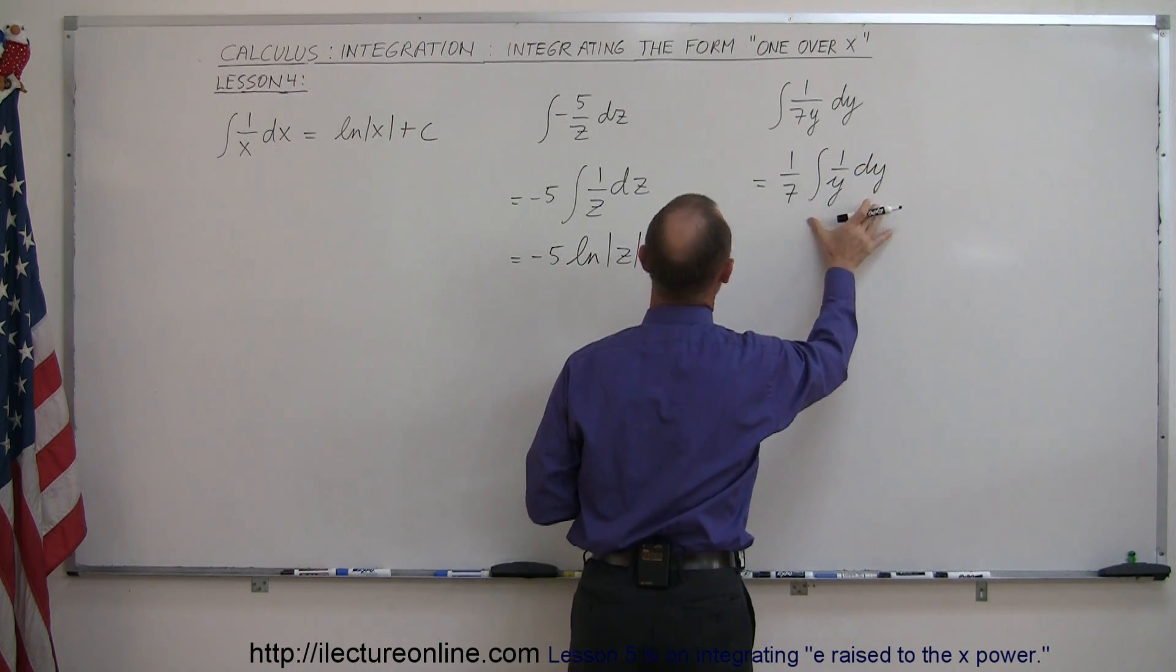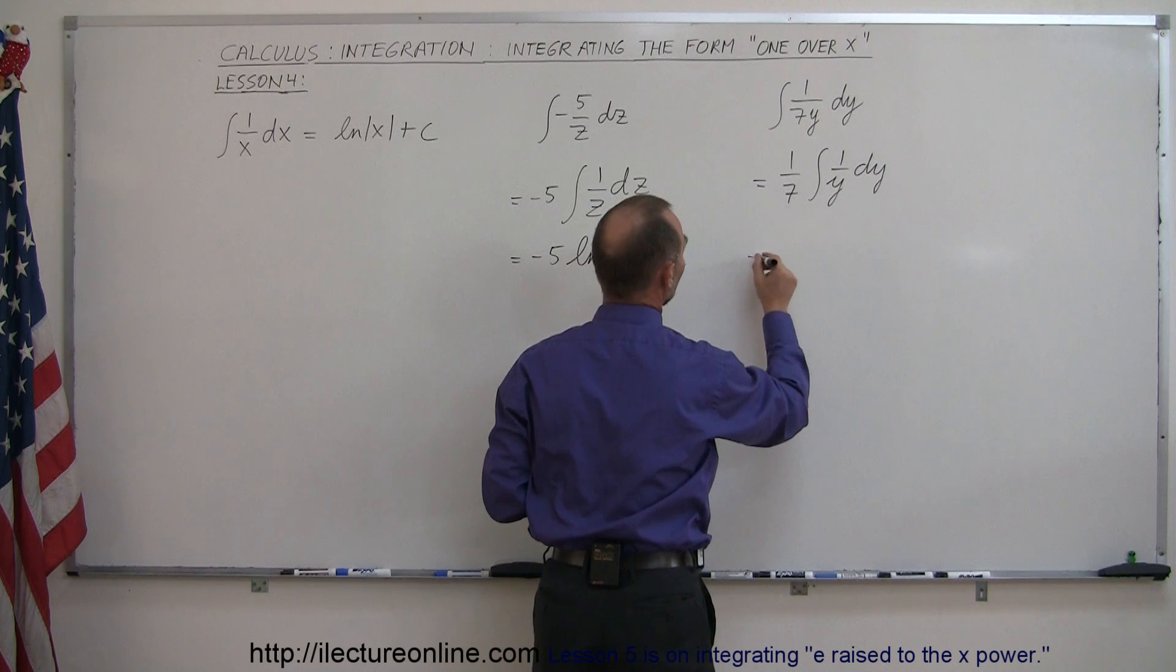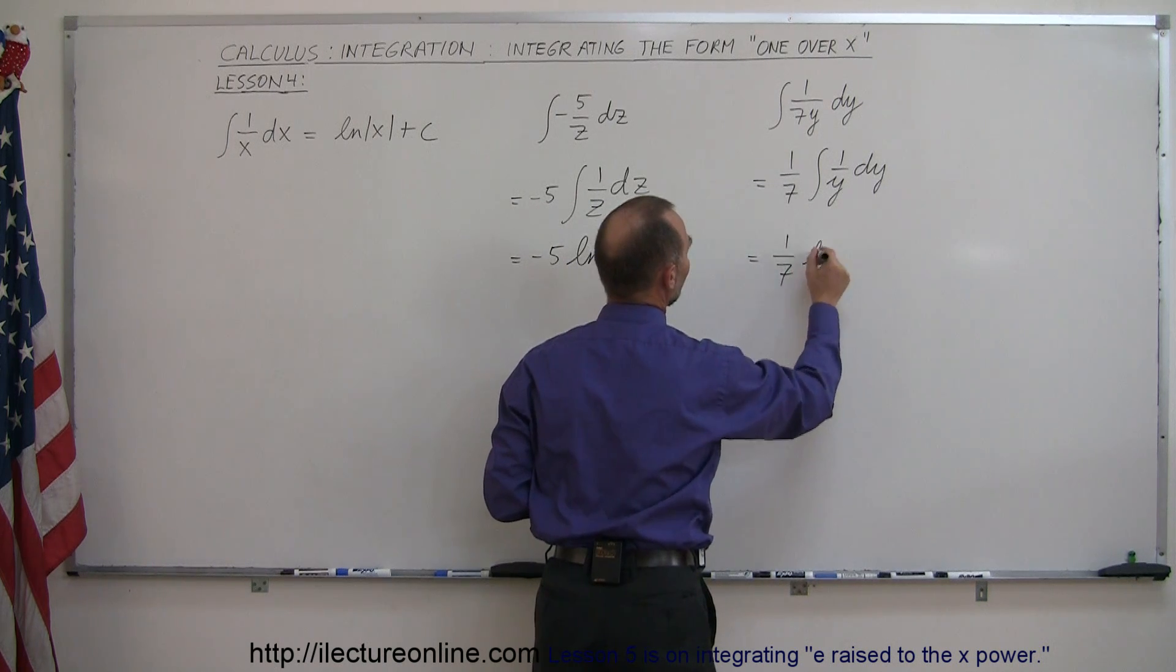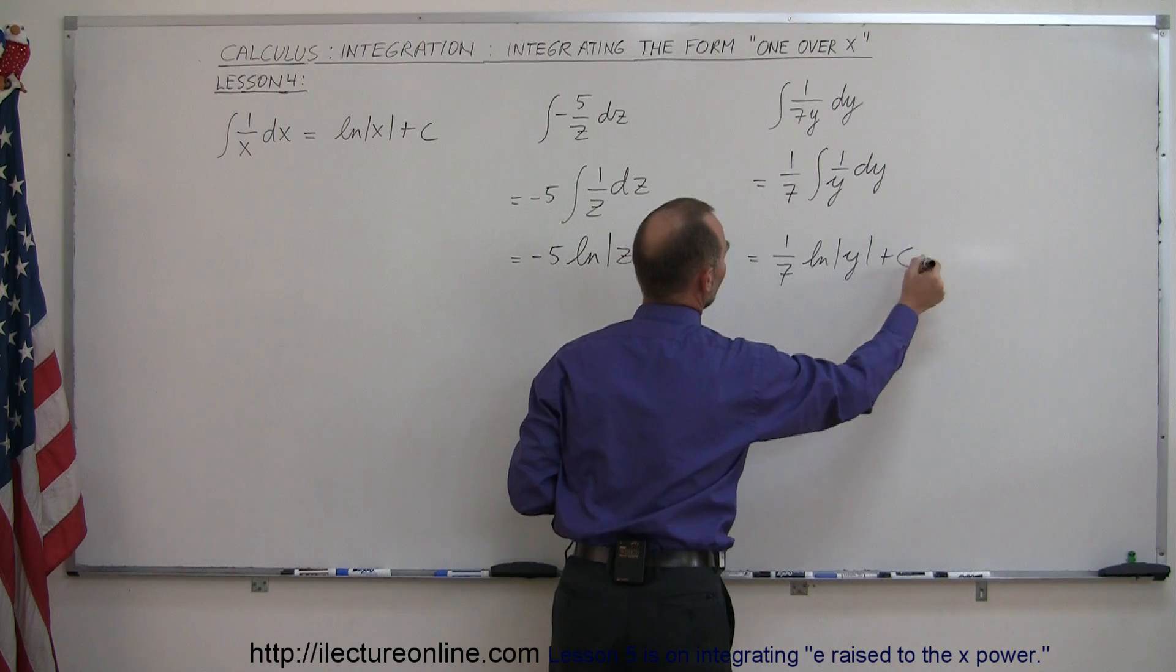And then you can see that this is the exact same form that we have over here. So this then becomes 1 over 7 times the natural log of y plus a constant of integration.